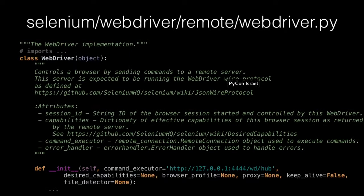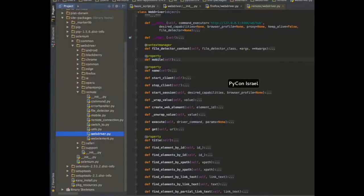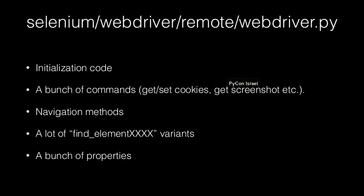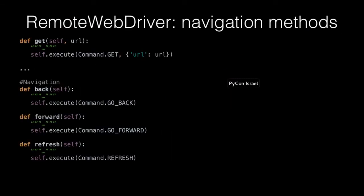Moving on to the remote WebDriver — this is part of the code. This is the WebDriver implementation for Python. It actually sends commands to the WebDriver server, which is how it handles the browser. There's initialization code, a bunch of commands — navigation commands like get, backward, forward, etc. — and a lot of find element type commands and properties. Looking at the implementation, all these navigation commands are just another call to self.execute, saying I'm sending the server a command. There's not even a return, so they're very thin — we don't need to do a lot to wrap these functions.